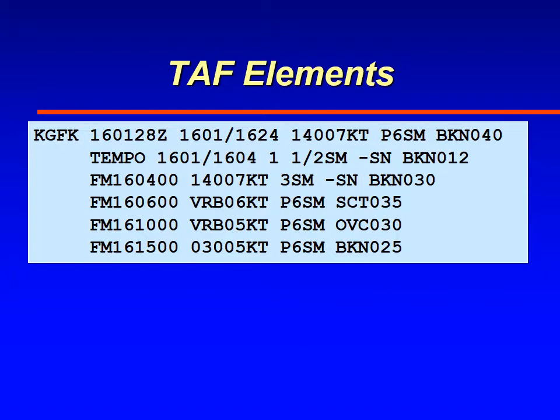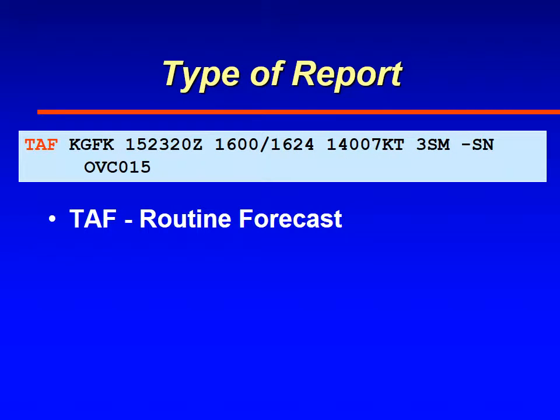This is what a TAF looks like. As you can see it starts out with the station identifier. After that it can have one line or it can have many lines — this one has six lines. TAFs sometimes start out with their identifier to tell you that it is a TAF. You may not always see that depending upon what website you get your weather information from, as sometimes that is truncated or deleted from the start of the TAF.